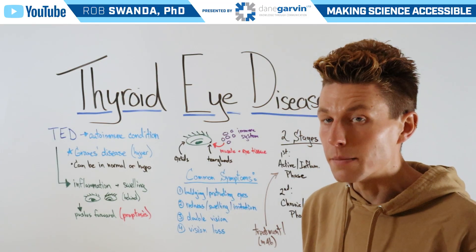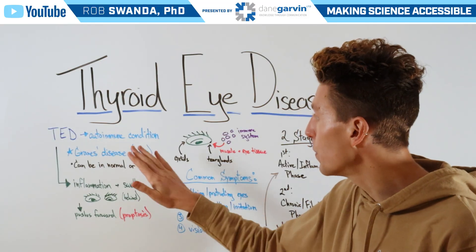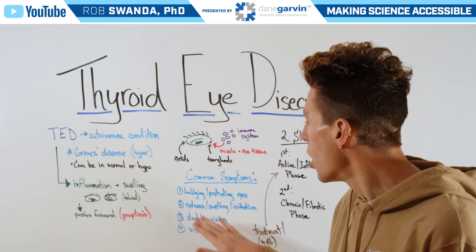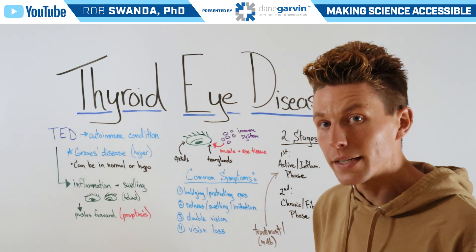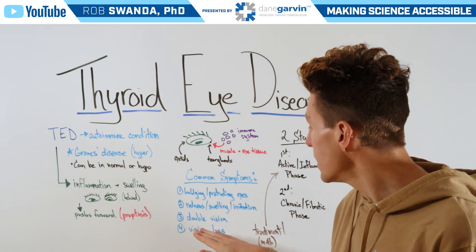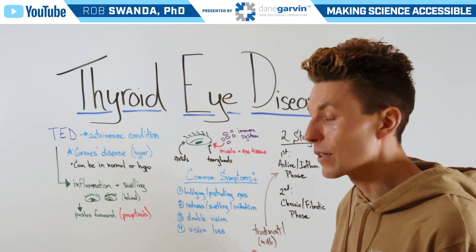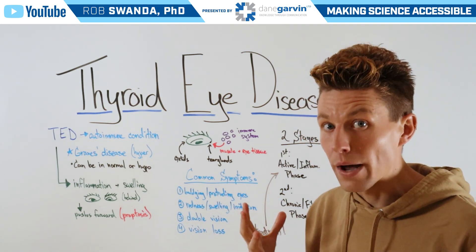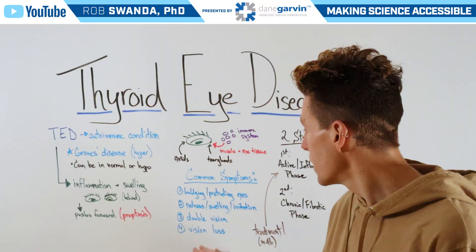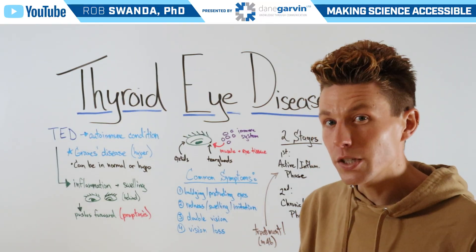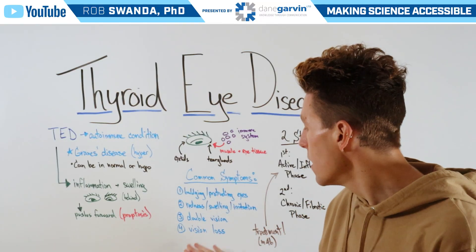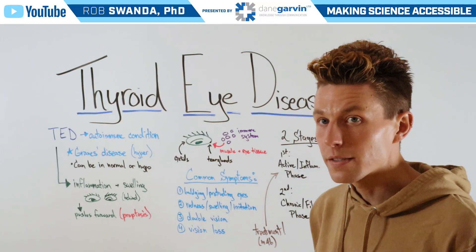The common symptoms associated with TED are those bulging or protruding eyes, redness, swelling, and irritation around the eyes, double vision, and in the most extreme cases, vision loss.